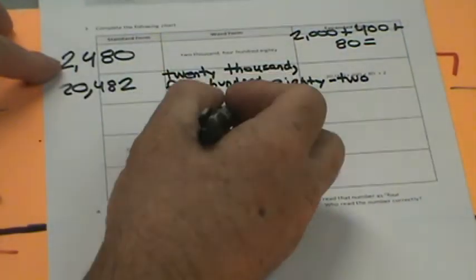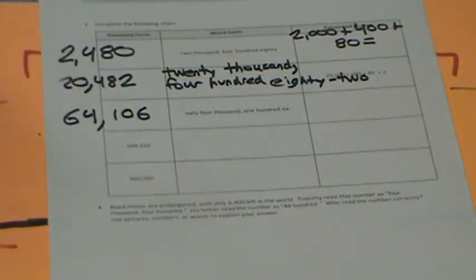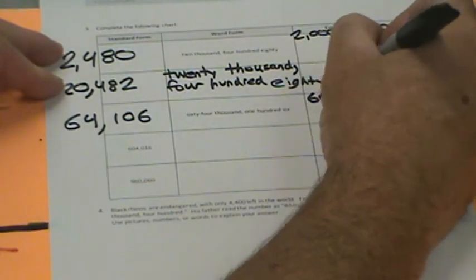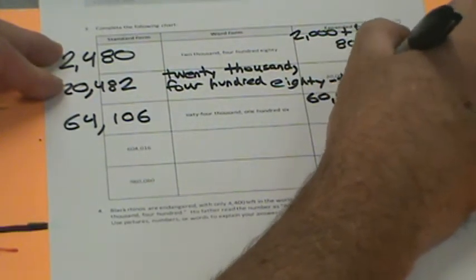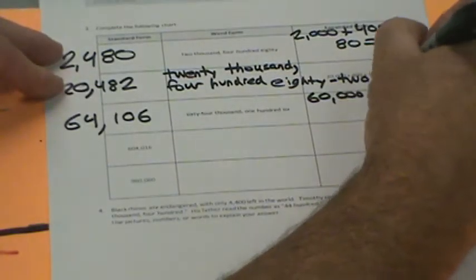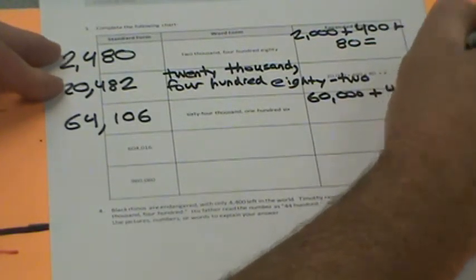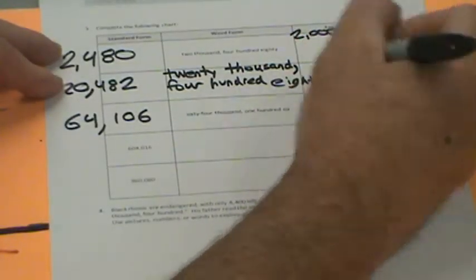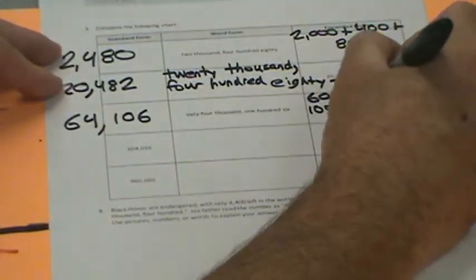We have 64,106. There's my 64,000, 106. We're going to write this in expanded form. We go 60,000, that's our ten thousands place value, plus 4,000, plus 100, plus what's left, a little 6.